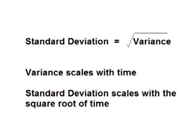One important difference to look at is the way variance and standard deviation scale — in other words, the way that variance and standard deviation increase over time. Variance scales with time; if you double the time, the variance will be twice as big. Standard deviation is the square root of variance, so standard deviation scales at the square root of time. For a four-year period, the annualized variance will be four times as large as for a one-year period, but the annualized standard deviation will only be twice as large.